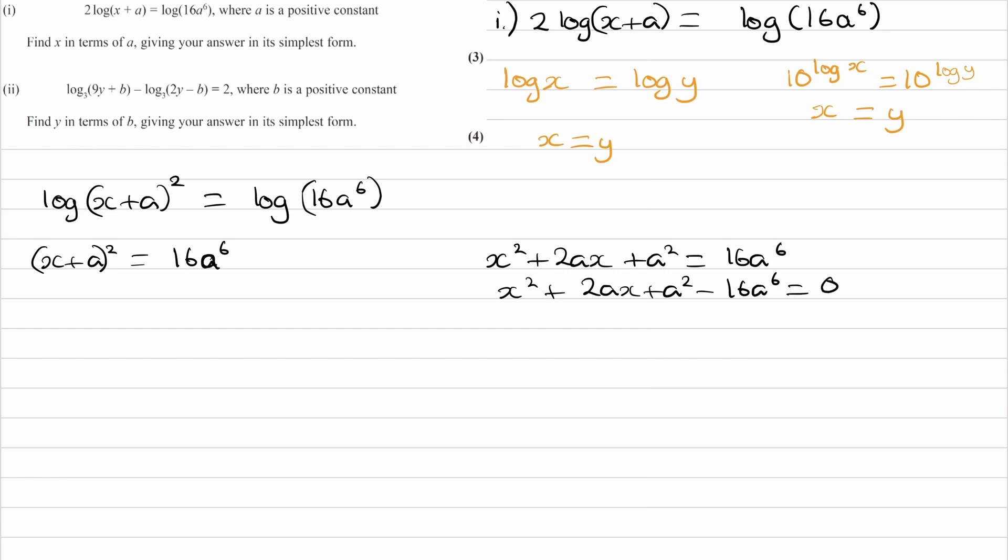we see an equation that isn't easily factorisable. There probably is a way of factorising it, but it's not straightforward. So probably not the best way to solve this question. What would be better instead is to square root both sides from this step here.